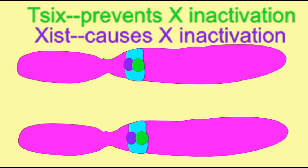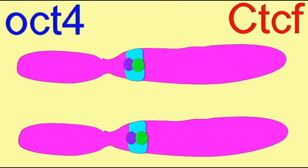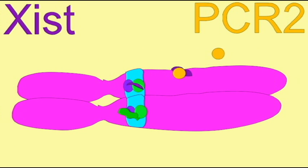When pairing occurs, something happens which results in an asymmetrical expression of Tsix. The chromosome that decreases production of Tsix then increases production of Xist.